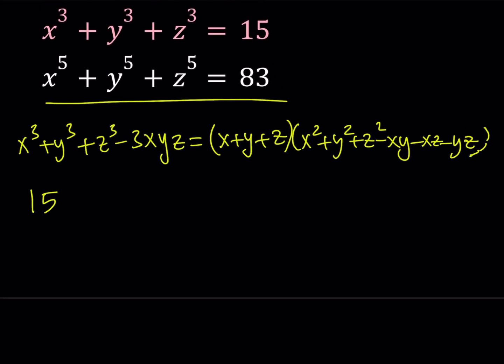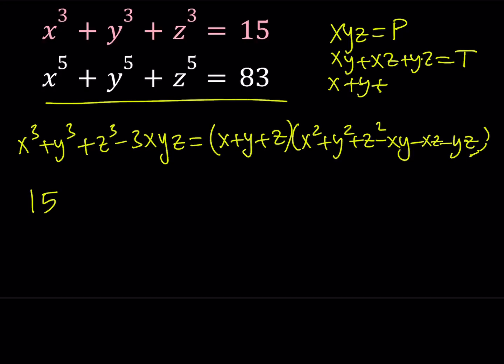For example, I would like to call x, y, z — that product — p. And then I'm going to be using xy plus xz plus yz, and I would like to call that t for two-way sums. And then I'm also going to be dealing with x plus y plus z. I could call that s, but I do know that s is equal to 3 here.